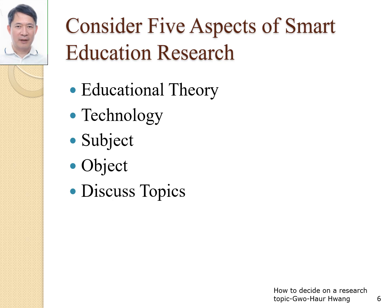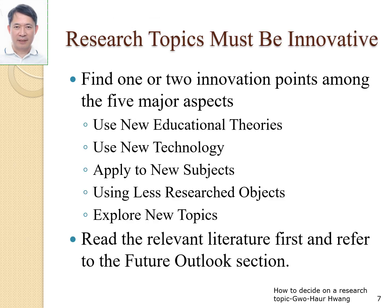However, combining our interests with our expertise does not mean it is a good research topic, because we also have to consider five aspects when doing research in smart education or digital learning fields. The first is: what educational theory does it comply with? The second: whether the technology is innovative enough? The third: is the learning subject extraordinary? Next: are the research subjects relatively rare? Finally: is the research topic to be discussed relatively new? In these five aspects, we must find at least one or two innovative points instead of all being conventional. We can use new educational theories and technologies, apply them to new subjects, use less-studied objects, or explore new research topics.